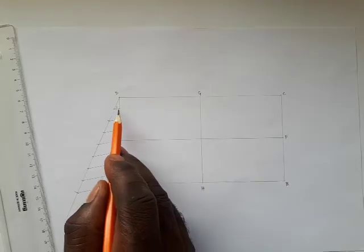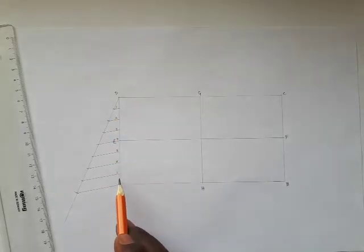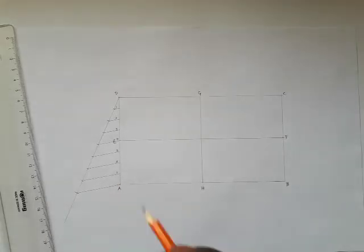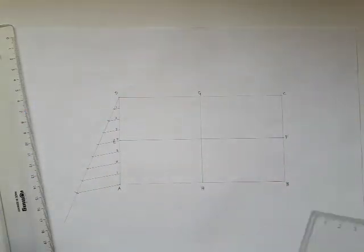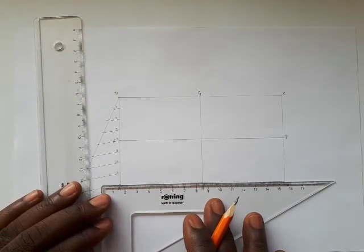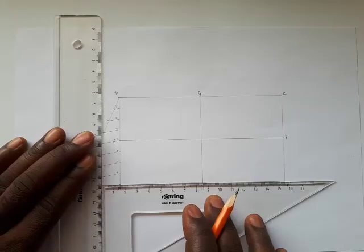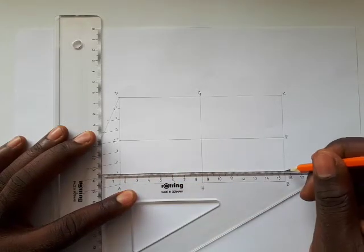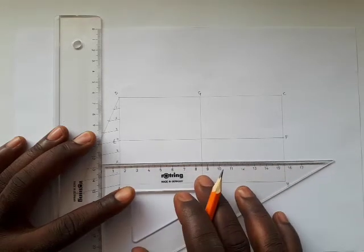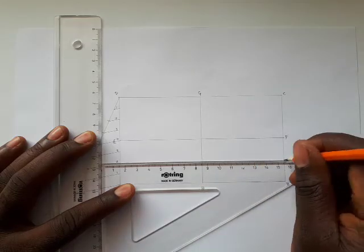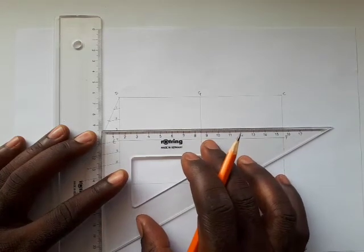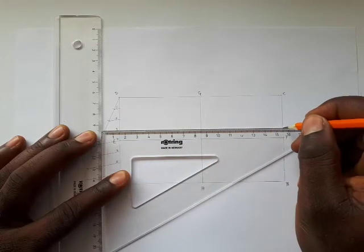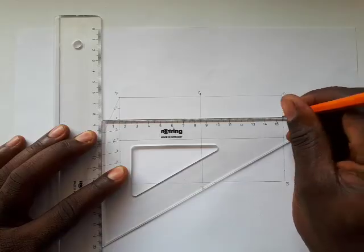Label those points 1, 2, 3, 4, 3, 2, 1. To transfer those points to the other side (line CB), align your set square with the reference line, support with your ruler, and slide to each division, making a dot rather than drawing a full line. Slide to point 1, make a dot; slide to point 2, make a dot; continue through points 3, 2, and 1 — transferring all points across.